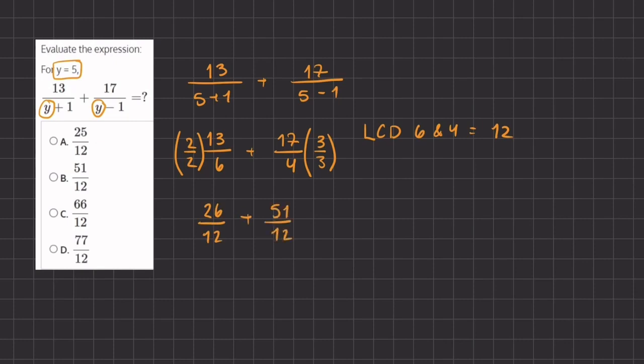Now we can add our numerators: 26 plus 51 gives us 77, all divided by the same denominator, which is 12.